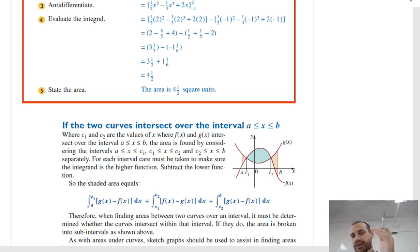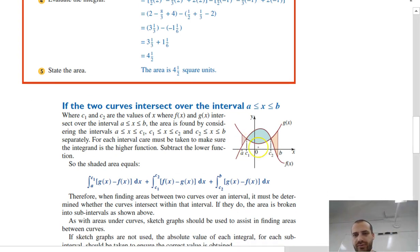Now, of course, this can become more complicated when you've got functions that meet at points, like two points like this, and you want to find the area between bounded by the curve, but also this area here and, say, this area here.